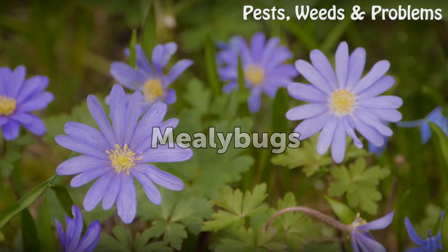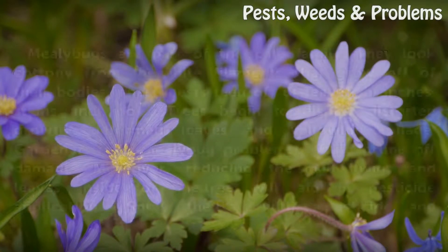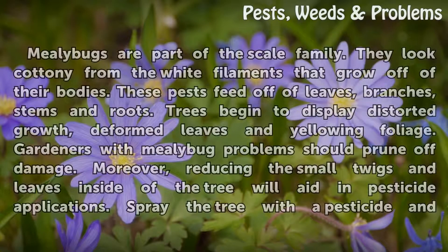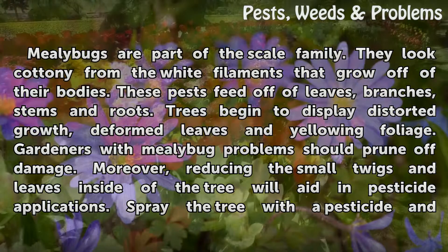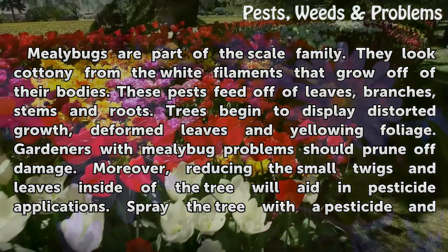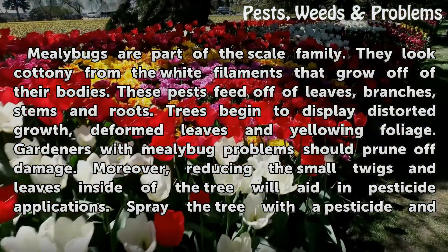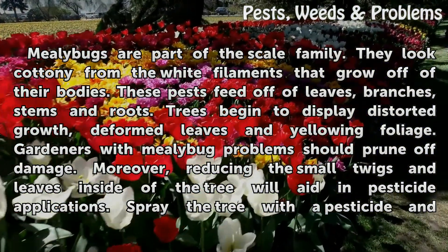Mealybugs are part of the scale family. They look cottony from the white filaments that grow off of their bodies. These pests feed off of leaves, branches, stems, and roots.